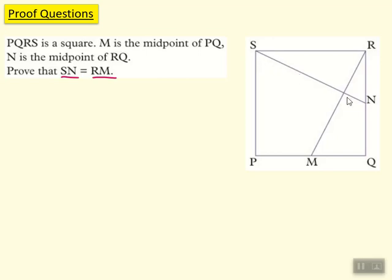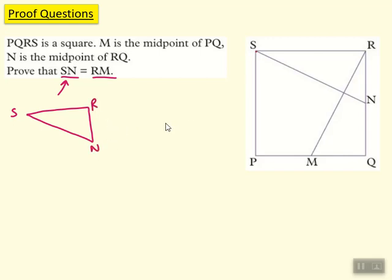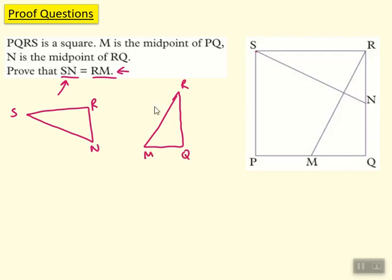First, let's look at SN and try to incorporate a triangle around it. The obvious one is triangle SNR. I always do a little sketch of the triangle that incorporates that side. Then let's do the same for RM — the obvious triangle is RMQ. I always sketch these little triangles somewhere on the side.